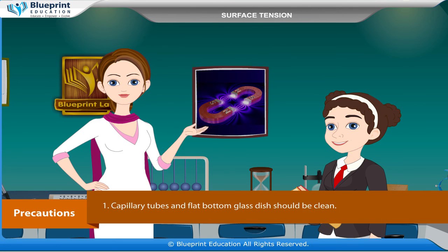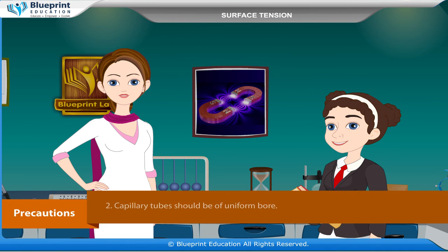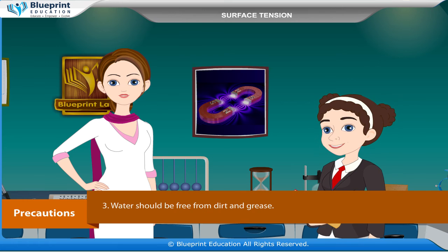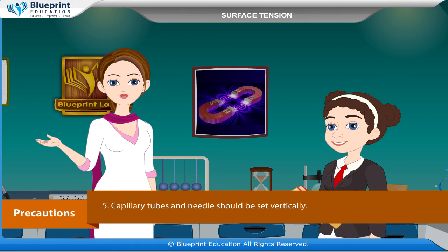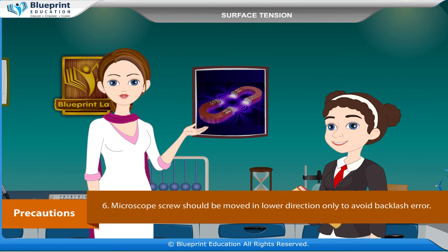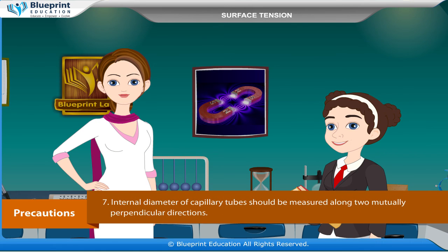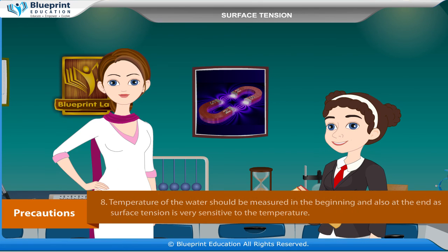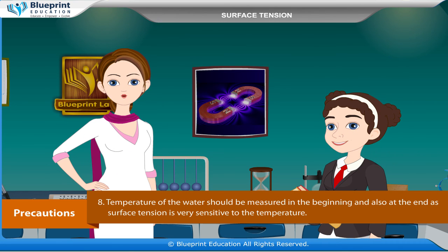Precautions: Capillary tubes and flat bottom glass dish should be clean. Capillary tubes should be of uniform bore. Water should be free from dirt and grease. Do not use distilled water. Capillary tubes and needles should be set vertically. Microscope screws should be moved in the lower direction only to avoid backlash error. Internal diameter of capillary tubes should be measured along two mutually perpendicular directions. Temperature of the water should be measured at the beginning and also at the end, as surface tension is very sensitive to temperature.